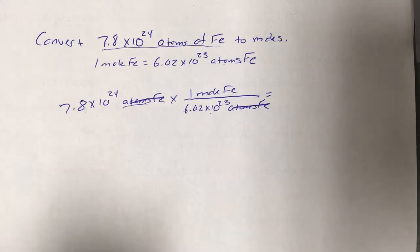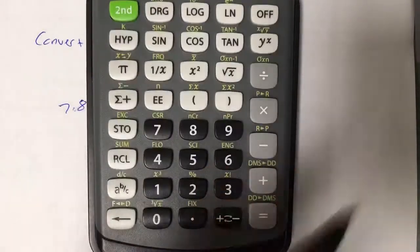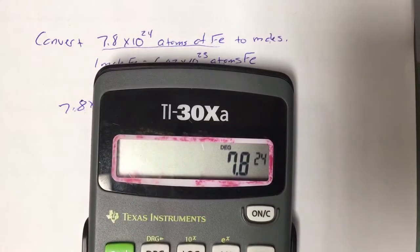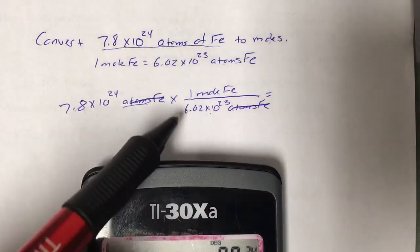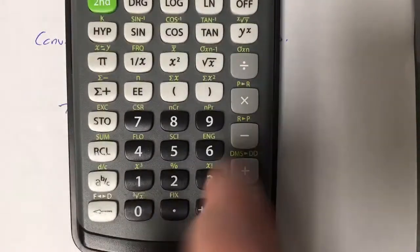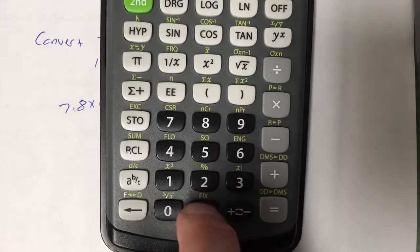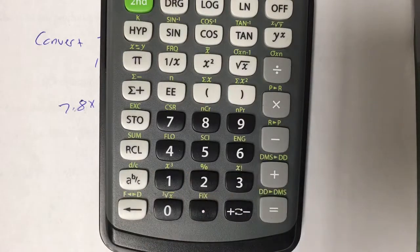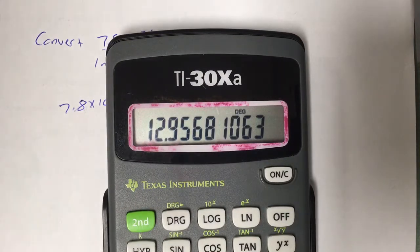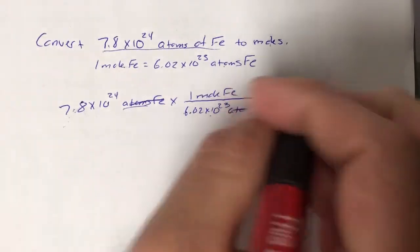Now put it in the calculator. I have two numbers in scientific notation. Start with 7.8, hit the exponential notation key, enter 24. The 6.02 times 10 to the 23rd is in the denominator, so I divide by it: hit divide, enter 6.02, hit exponential notation key, enter 23, then hit equals. The calculator gives 12.9568... Rounding to two significant figures gives 13 moles of iron.